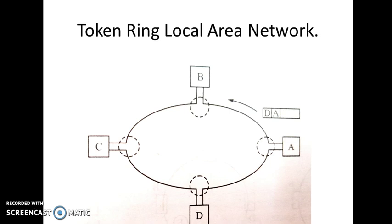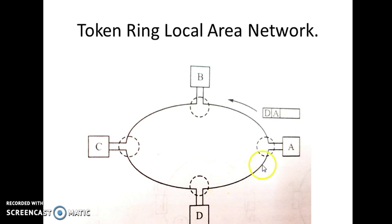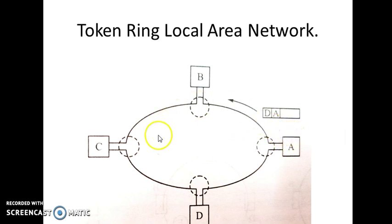I will take a simple case in which there are only 4 stations: Station A, Station B, Station C, and Station D. The first thing to know is that in Token Ring Local Area Network, all the stations are connected in the form of a ring through point-to-point links. A is connected to B, B is connected to C, C is connected to D, and D is connected to A, forming a ring.